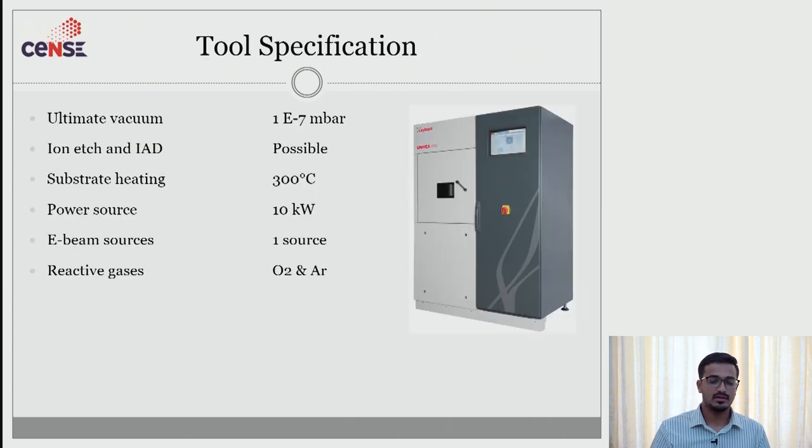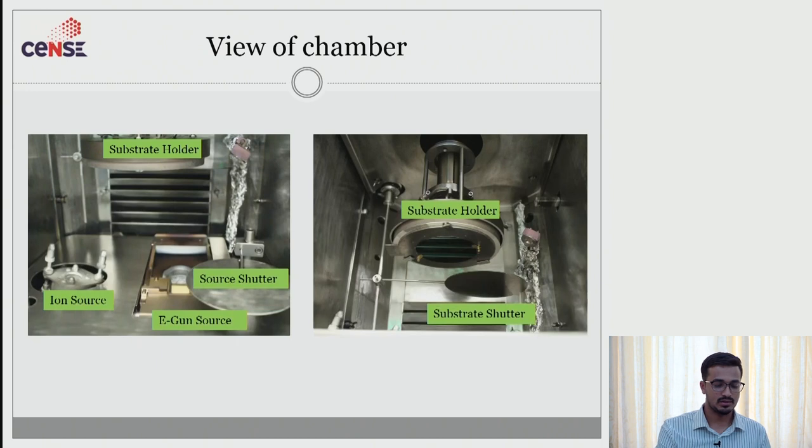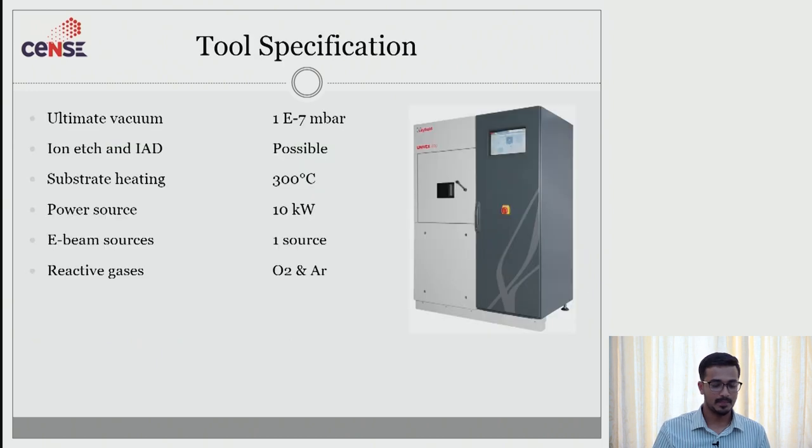Moving on to tool specifications. The ultimate vacuum that this tool can achieve is 1E-7 millibar and we can also do ion etch and ion assisted deposition. Substrate heating can be up to 300 degree celsius and the power source that we are using is 10 kilowatt. E-beam source we have only one gun as I earlier showed. And we can do a reactive deposition and we can use argon for ion edge deposition and ion assisted deposition. And we can also use reactive gases to achieve some oxides. And here the gases that we use are oxygen and argon.